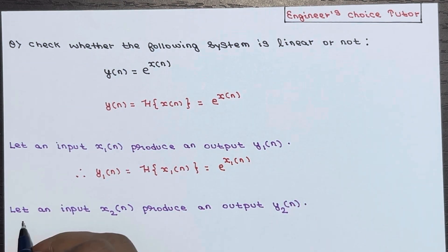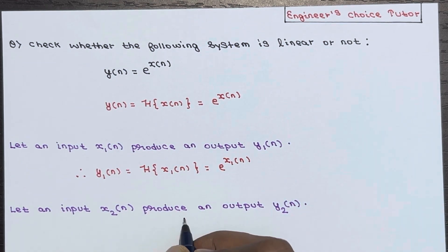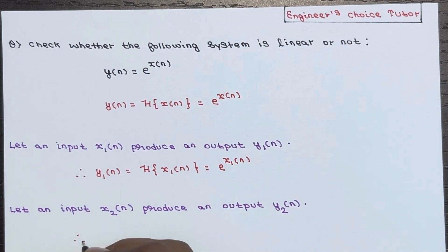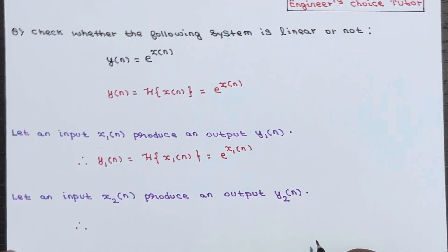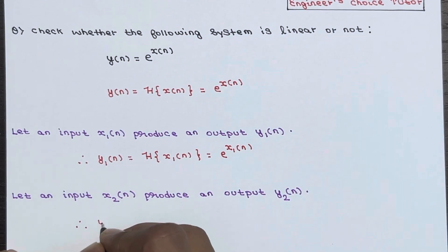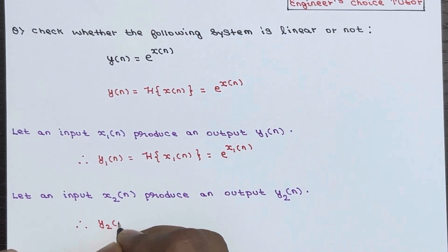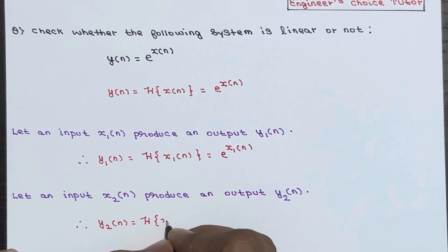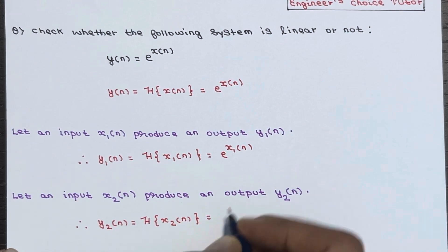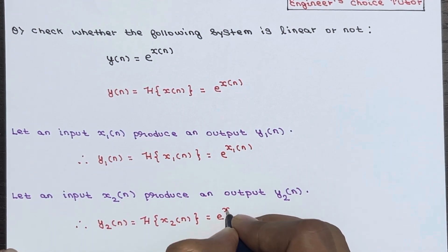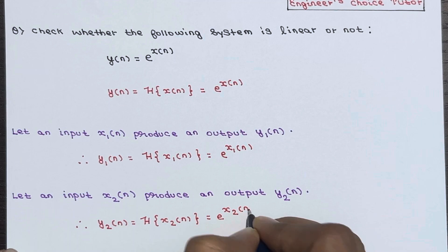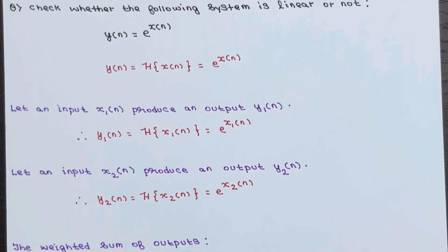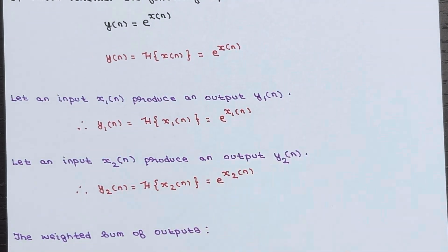Now let an input x2(n) produce an output y2(n). So y2(n) is basically the transform of x2(n), and this will become e to the power x2(n).